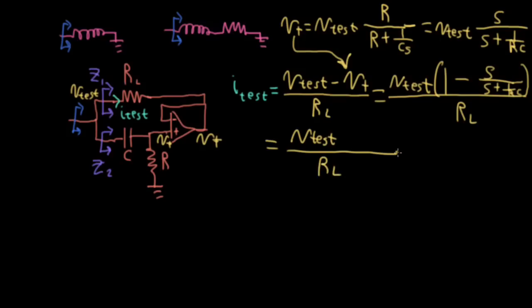I could rewrite this as VTEST over RL. And in the numerator here, I could rewrite this as S plus 1 over RC over S plus 1 over RC. So that's an overly complicated way of writing 1. And then I subtract this S over S plus 1 over RC. And the S's will then cancel.